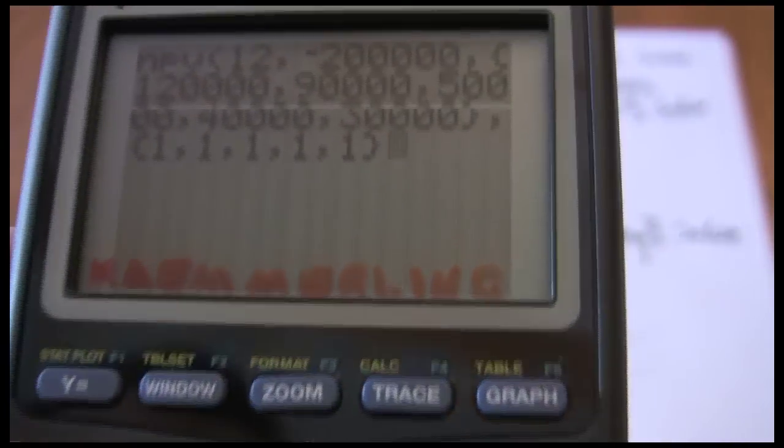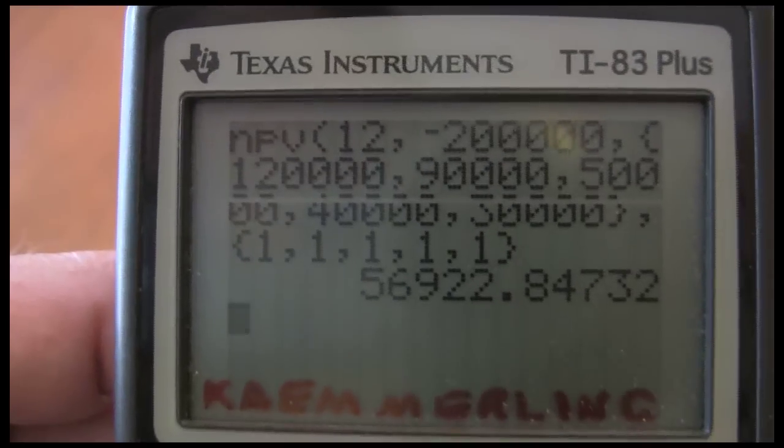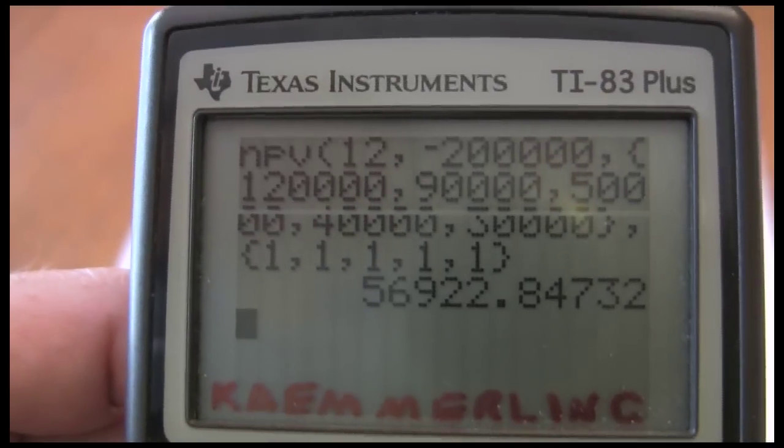Now I want to solve, so green shift, solve. I get a net present value of $56,922.85.